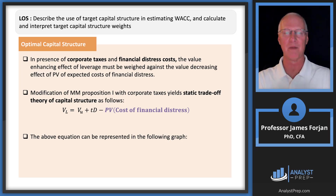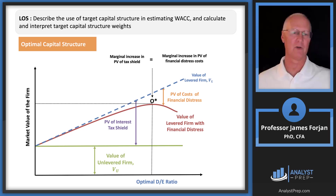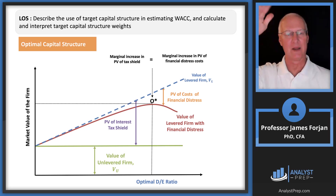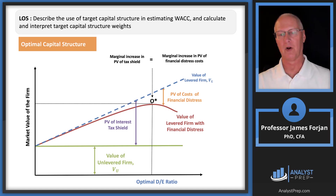If I were creating an exam, I would show students this picture. On the vertical axis, there's the market value of the firm — our goal is to make that number super high. On the horizontal axis, there's a measure of leverage — the debt-equity ratio from zero all the way out. Let's start with the green line to understand the graphical representation of optimal capital structure.